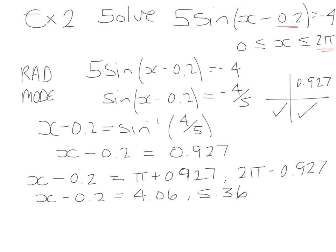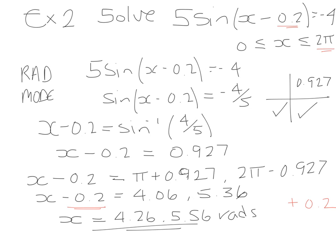And again, we've got that final step to do because we're looking at a phase angle trig equation. So we have to take the minus 0.2 to the other side. So we're going to add that on. So we're going to resolve this part. So it's going to be plus 0.2. So x is going to be equal to 4.26 and 5.56 radians. And that's our final answer.